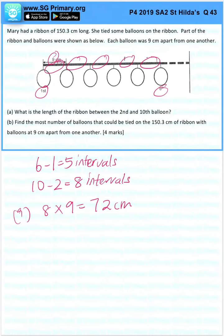Part B: Find the most number of balloons that could be tied on the 150.3 cm of ribbon with balloons at 9 cm apart from one another. Let's divide first.